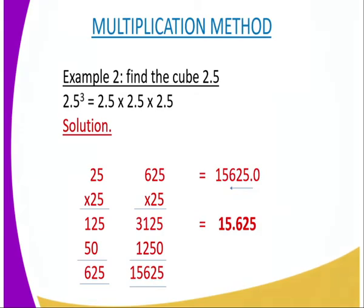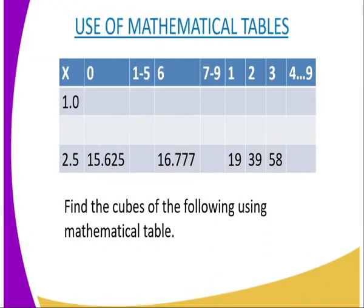Then from there, we can look on another example, use of mathematical table. On the mathematical table, we have three columns. The first column, we have the X column. And also, we have the middle column. The middle columns run from 0 up to 9, 0 up to 9.